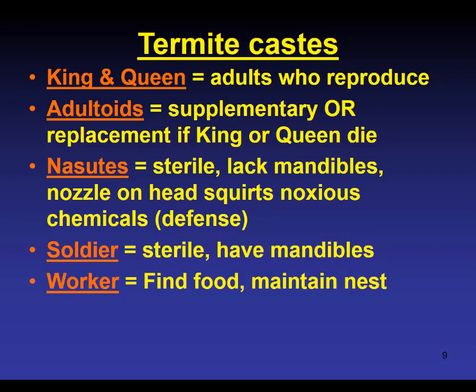These are the castes of termites. You've got the reproductive individuals — the kings and queens — whose job is reproduction. They do not fight battles, build the nest, or go out for food; their whole job is reproduction. There are also adultoids, which are similar to kings and queens — they are available if the king or queen die, or they could be supplementary reproductives, also doing some reproduction in addition to the king and queen. Then we have Nasutes, soldiers, and workers — all three of these castes are sterile. They will never have their own offspring, but they are still part of the colony, still related to the king and queen.